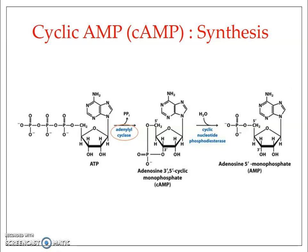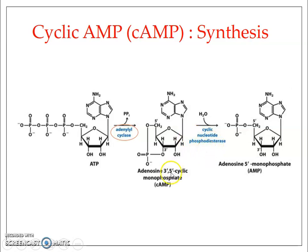The intracellular concentration of cyclic AMP depends on two enzymes: activation of adenylyl cyclase triggers synthesis of cyclic AMP from ATP, while phosphodiesterase converts cyclic AMP back into AMP. When phosphodiesterase is very active, the concentration of cyclic AMP comes down and AMP increases. When adenylyl cyclase activity is high, cyclic AMP concentration goes up. These two enzymes play a very important role in maintaining cyclic AMP concentration inside the cell.